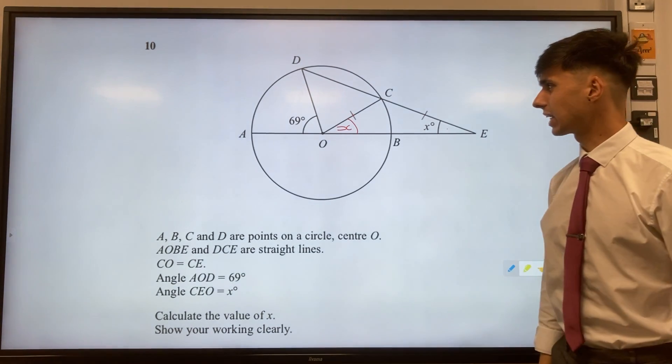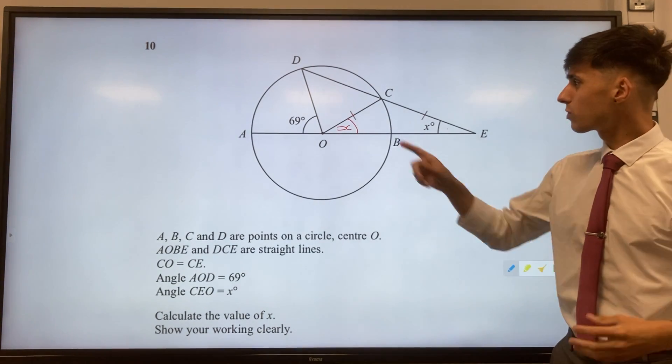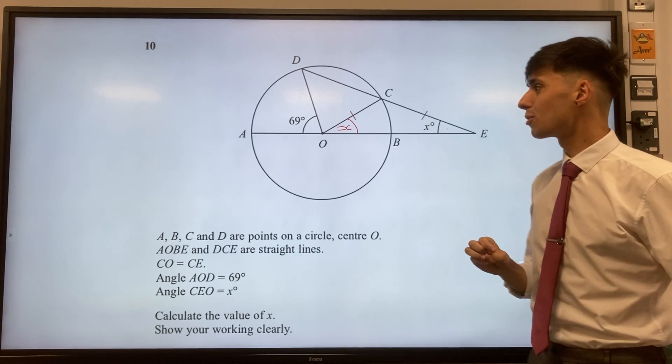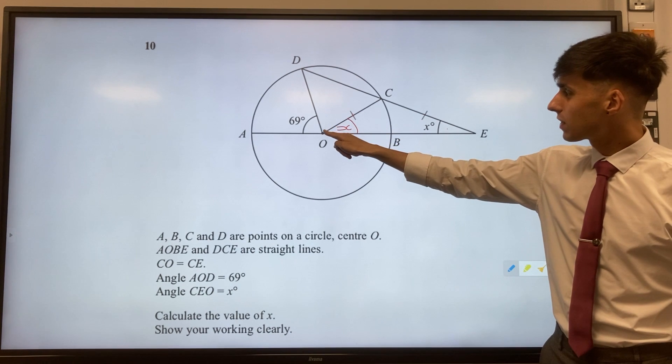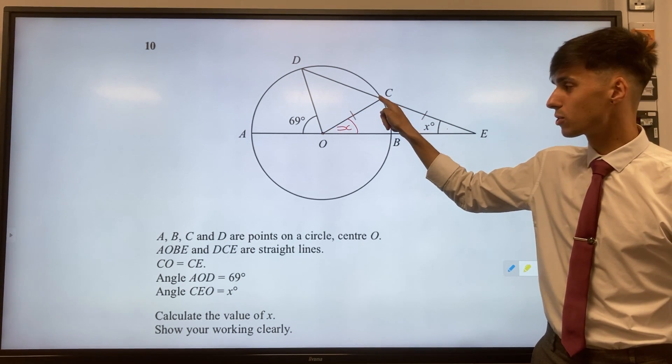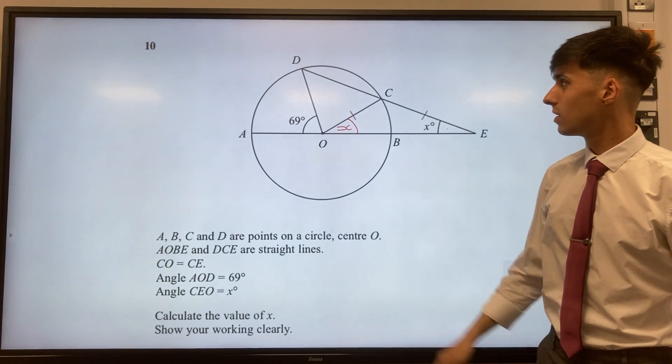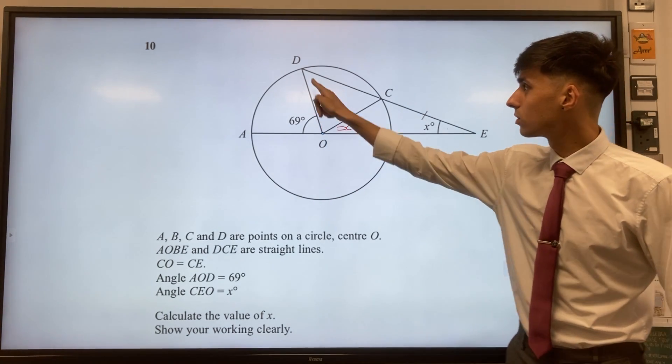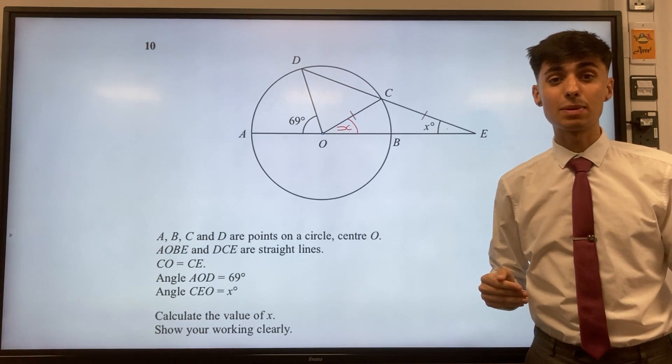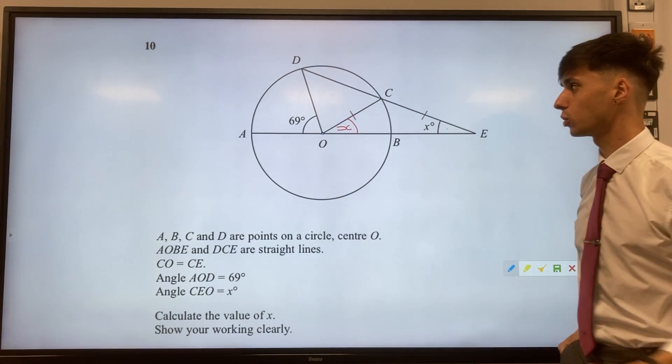Next step of thinking would be trying to reason about this triangle in the middle somehow, and it might not be obvious at the very start, but if you look at this side here it goes from the centre of the circle to the circumference so it's a radius, and so does this side here, OD. That means they must both be the same length because they're both radii of the same circle.